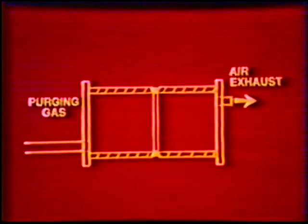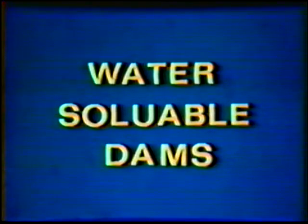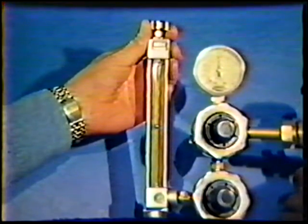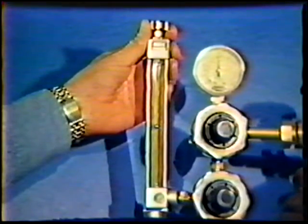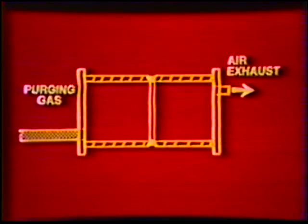Since argon is heavier than air, the exhaust hole should be located higher to prevent argon from escaping prematurely. A plastic window is placed in one of the caps to allow visibility of the root of the joint. Water-soluble dams are also used to contain the purging gas; they are fastened to the inside of the pipe and then dissolved with water after welding. The purging gas is allowed to flow at a given rate for a specific time prior to depositing the first tack weld. The flow rate and purge time depend on the maximum oxygen level permitted and the size of the pipe system. The higher the flow rate, the less pre-purge time is required. However, the flow rate should not be set so high that turbulent flow is caused, which creates a mix of trapped air and purging gas.